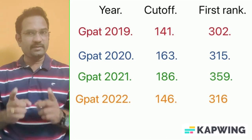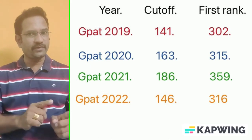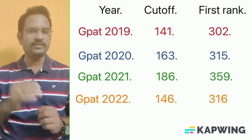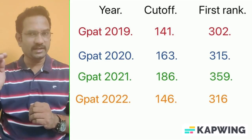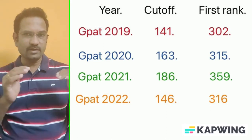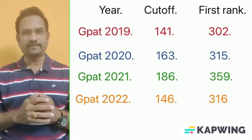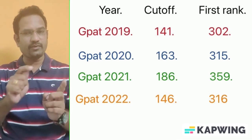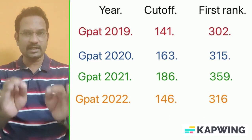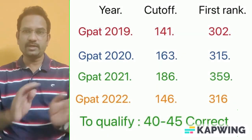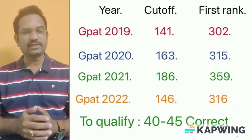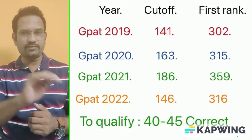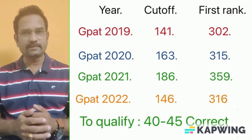The exam is for 500 marks. You have 125 questions, and each question carries 4 marks, so totally it is 500 marks. Out of 500, the cutoff mark is 140 to 160. If you can answer 40 to 45 questions correctly without any negatives, you will get 140 to 160 marks — 40 questions correct means 160 marks, and 45 means 180 marks.